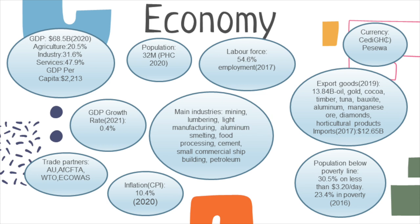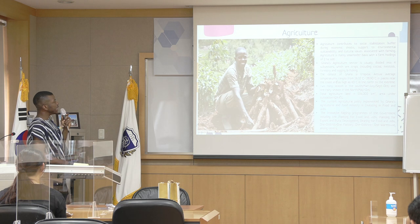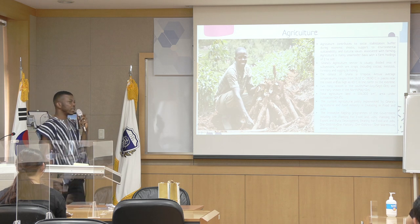We also have the World Trade Organization and ECOWAS. The main industries include mining, lumbering, and the rest. Based on 2019 data we had export and import figures as shown. The population below the poverty line is 30.5%, living on less than $3.20 per day. 23.4% are in poverty according to 2016 data.